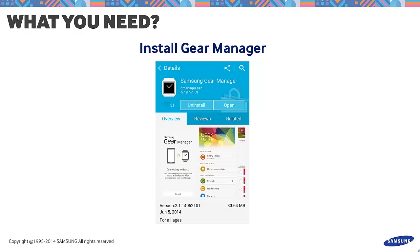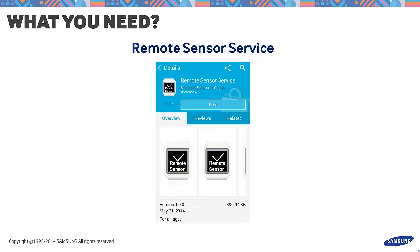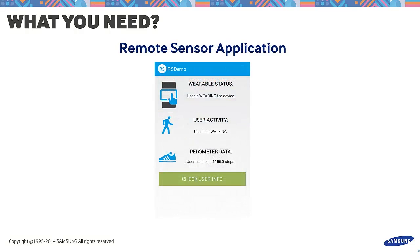First, install Gear Manager, followed by the Remote Sensor service. You can download this from Samsung Apps. And finally, the Remote Sensor application. We'll be doing this later for testing, but you can go ahead and download this from the sample application attached to this blog post. For those viewing directly from YouTube, simply go to developer.samsung.com and check out the tutorial entries.